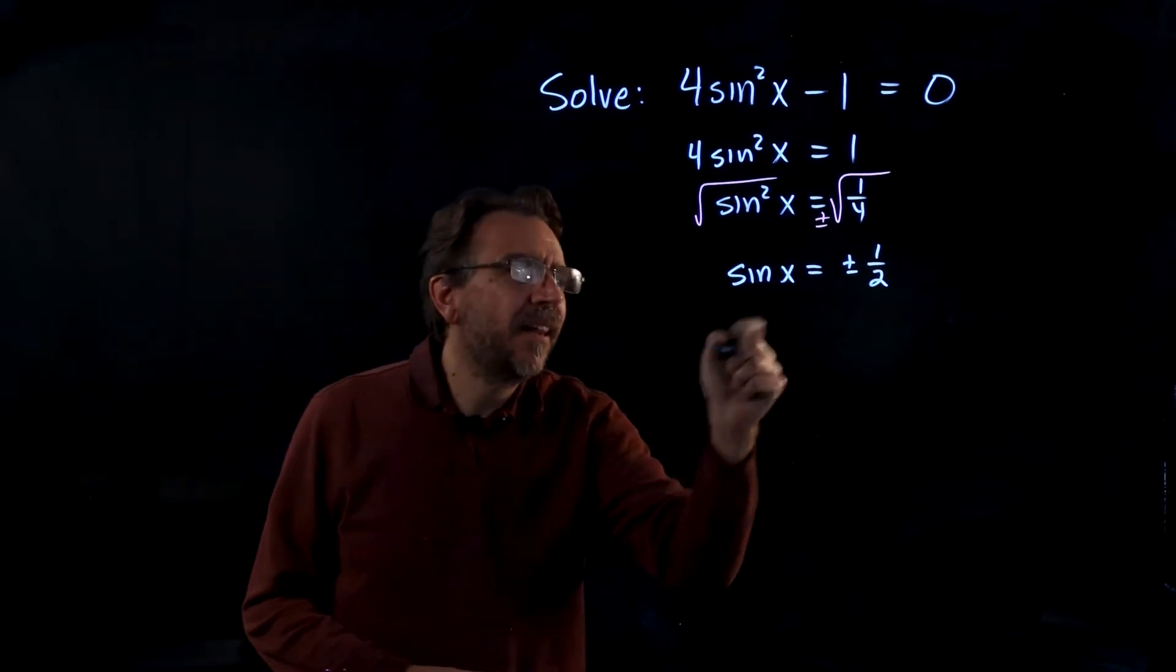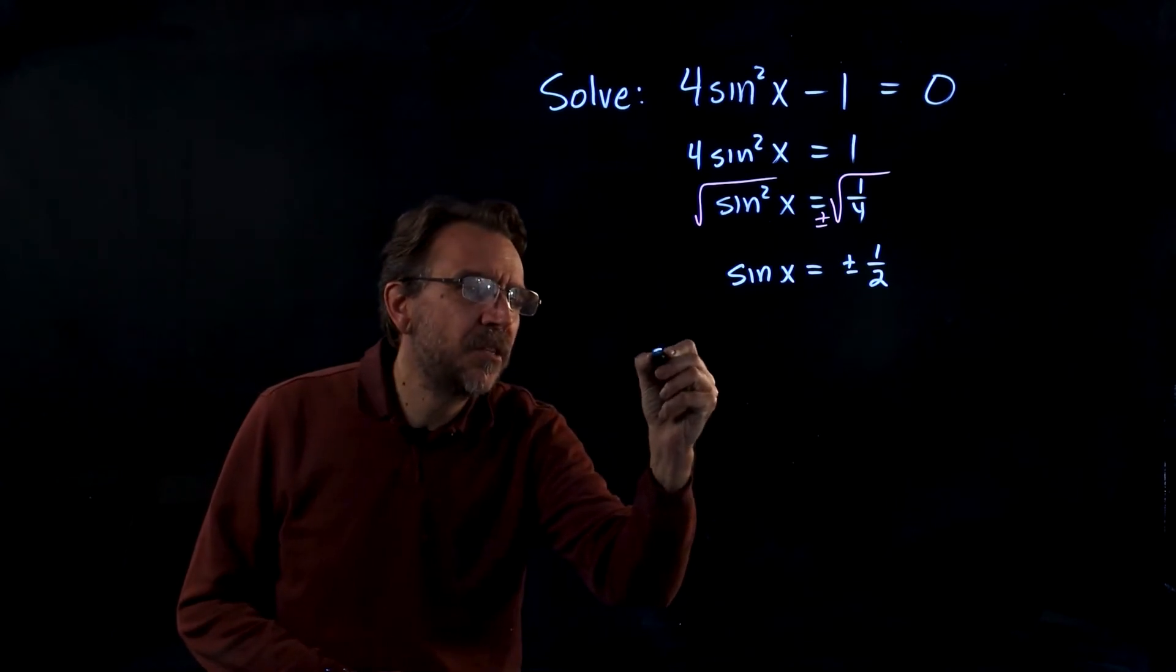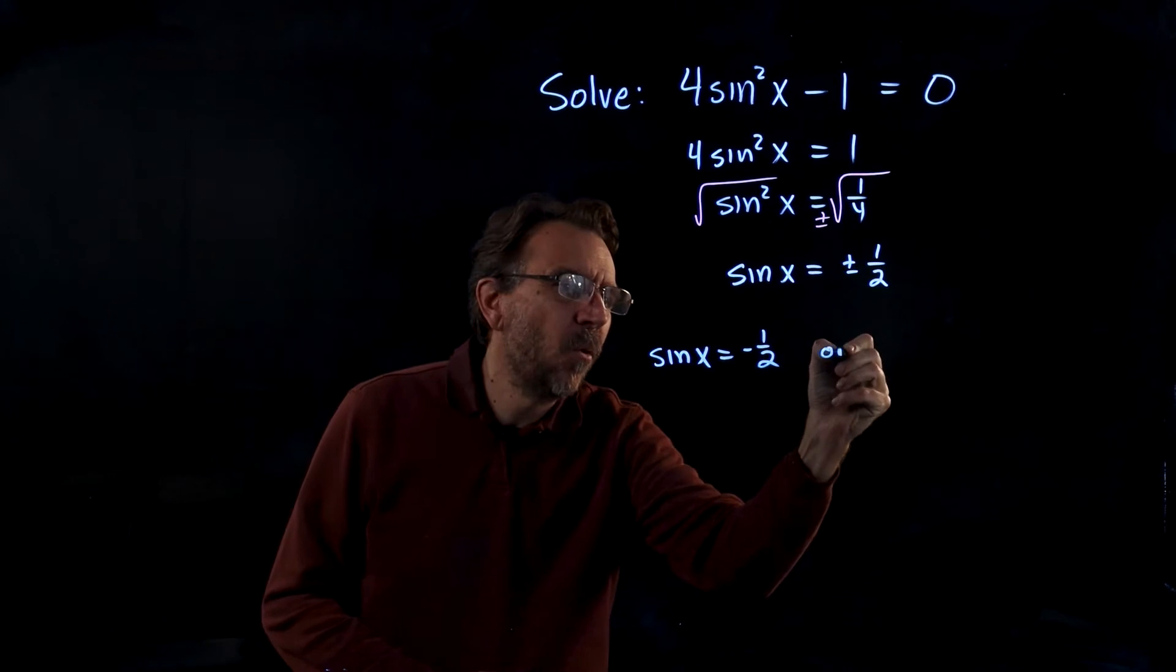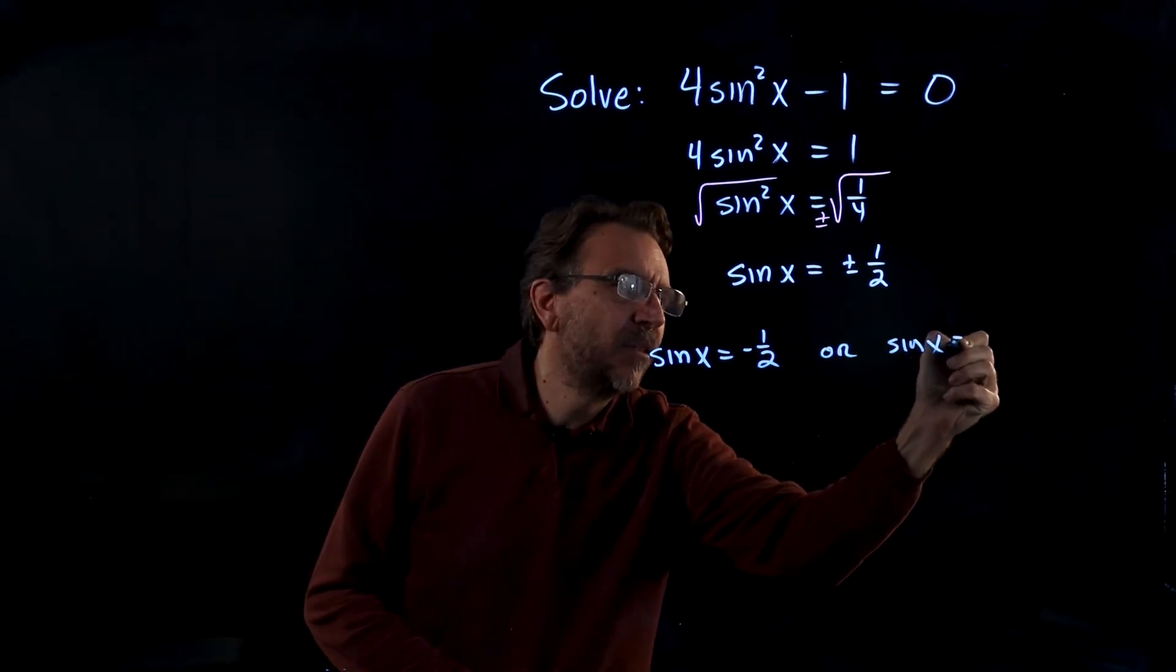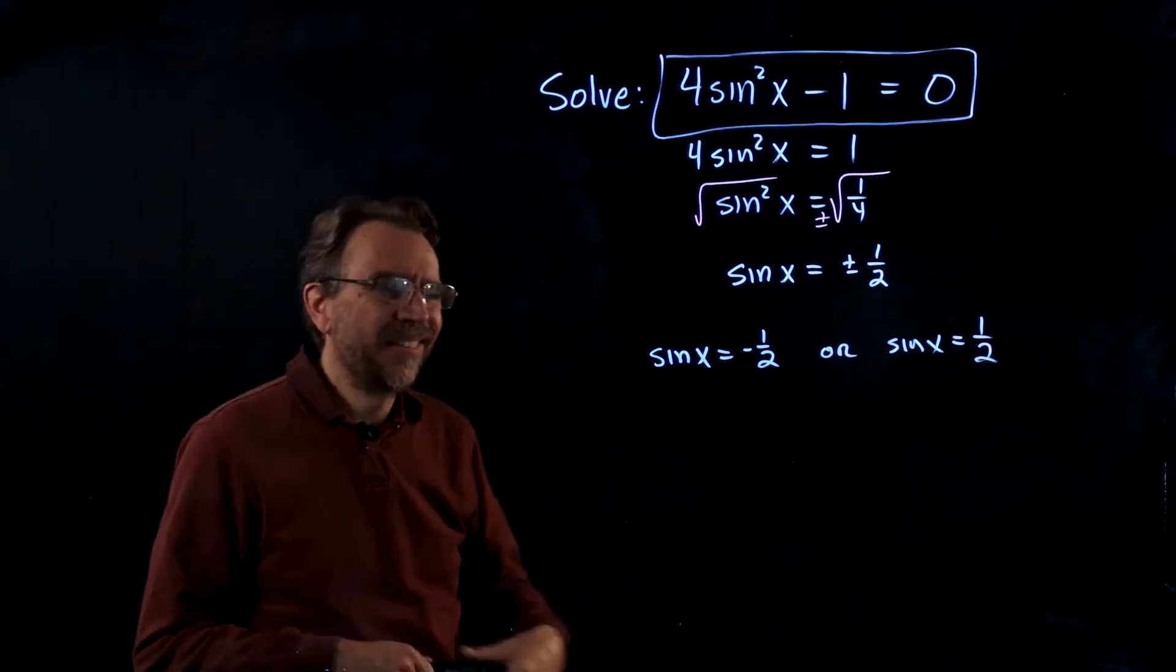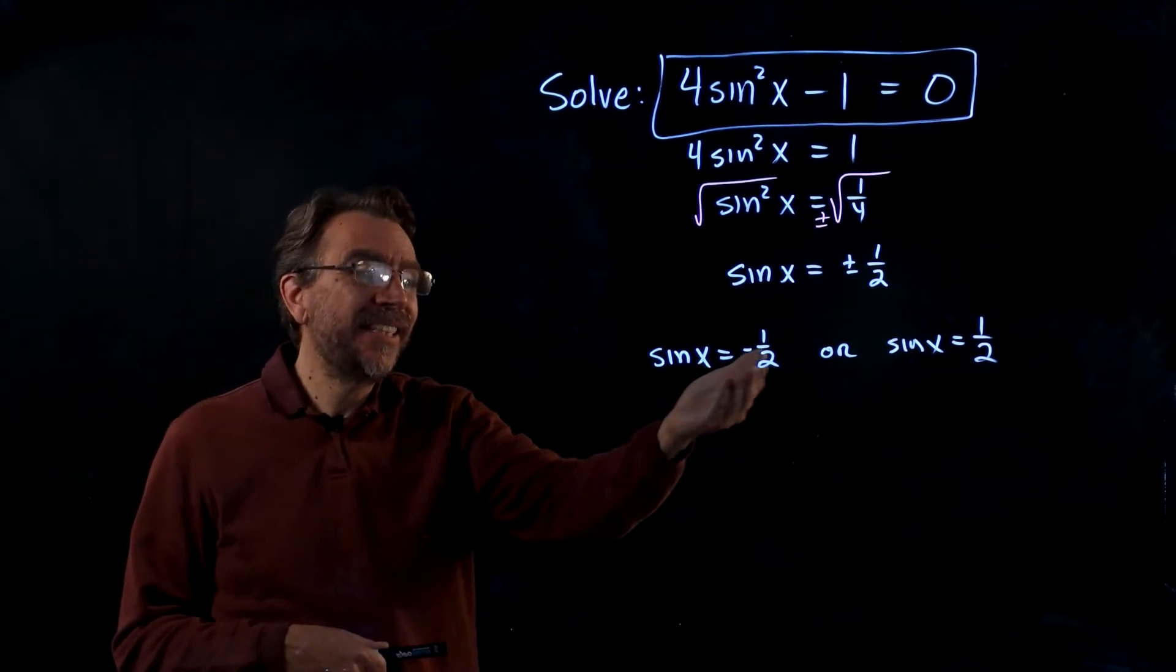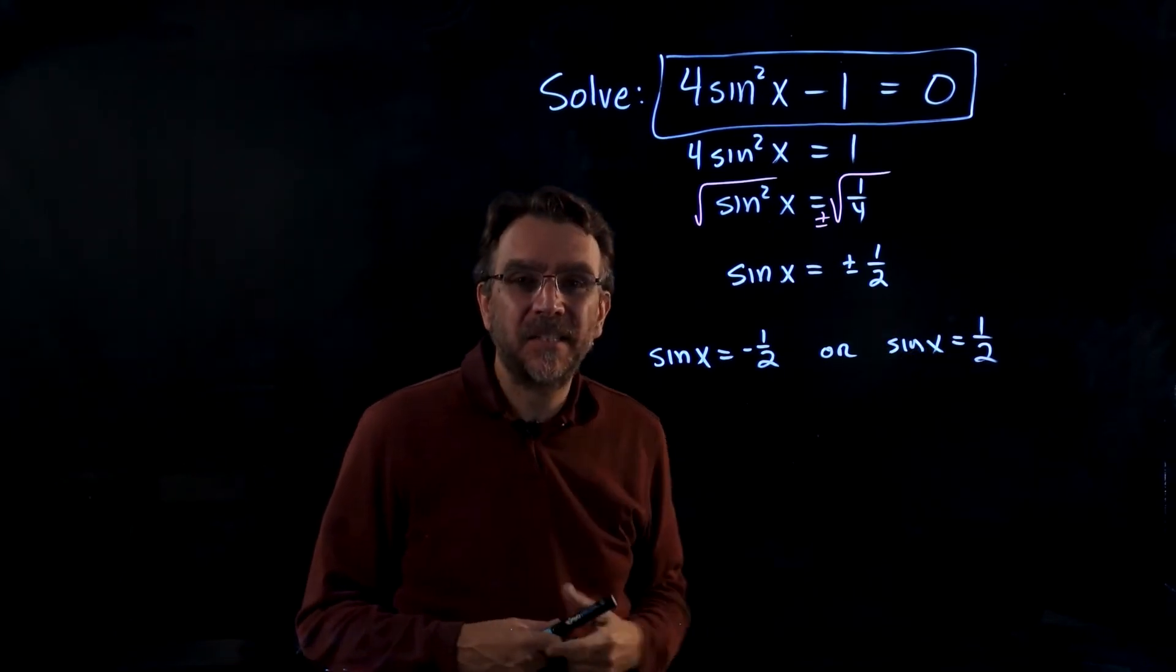So next we're going to take both of those equations. We have sine x equals negative 1 half or sine x equals positive 1 half. So at this point we have to figure out where is sine x negative and where is sine x positive.